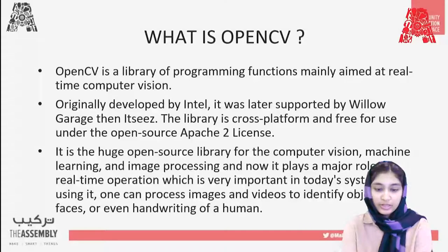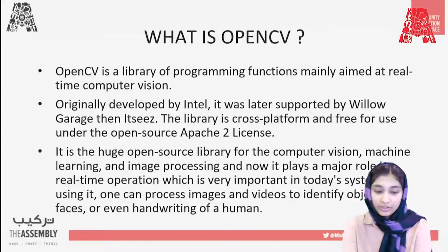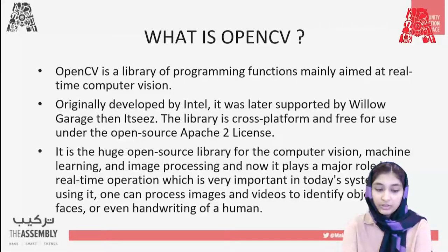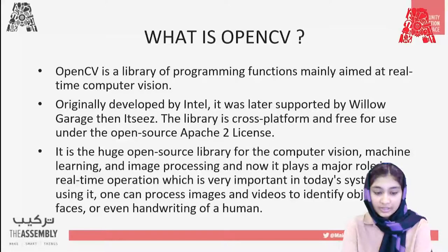So what is OpenCV? OpenCV is a library focusing on programming functions mainly aimed at real-time computer vision. Originally developed by Intel, it was later supported by Willow Garage. The library is cross-platform and free to use under the open source Apache 2 license. It is a huge open source library for computer vision, machine learning, and image processing, and plays a major role in real-time operations. By using it, one can process images and videos to identify objects, faces, or even handwriting.